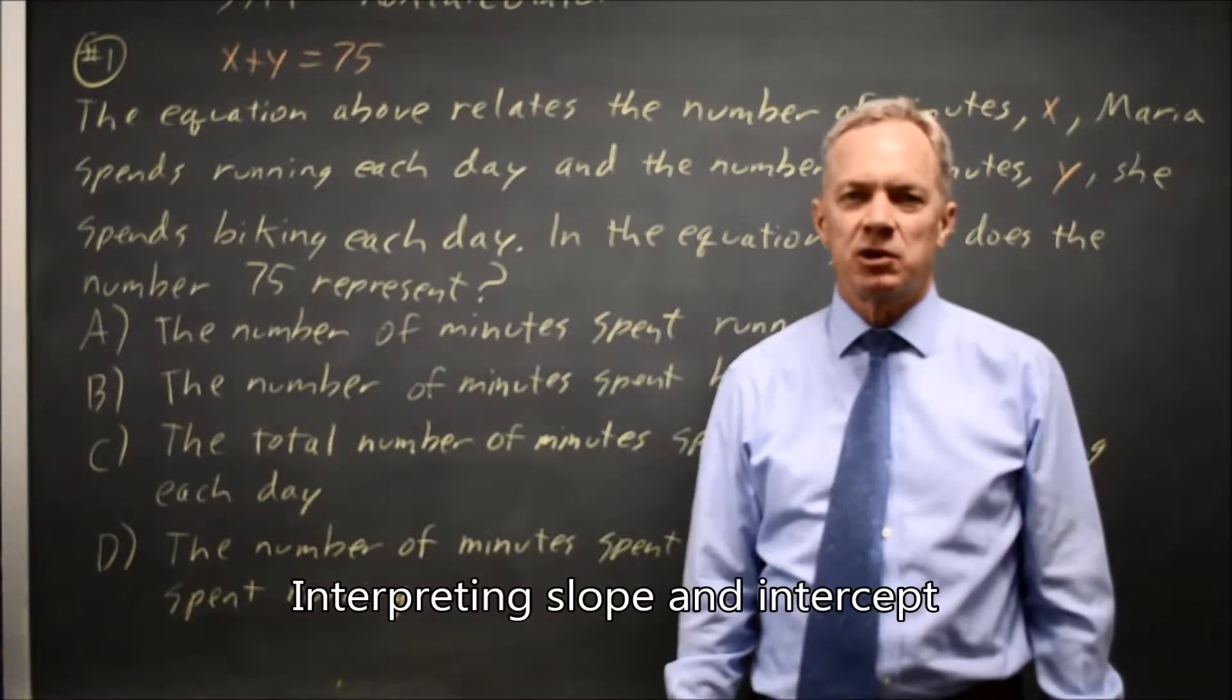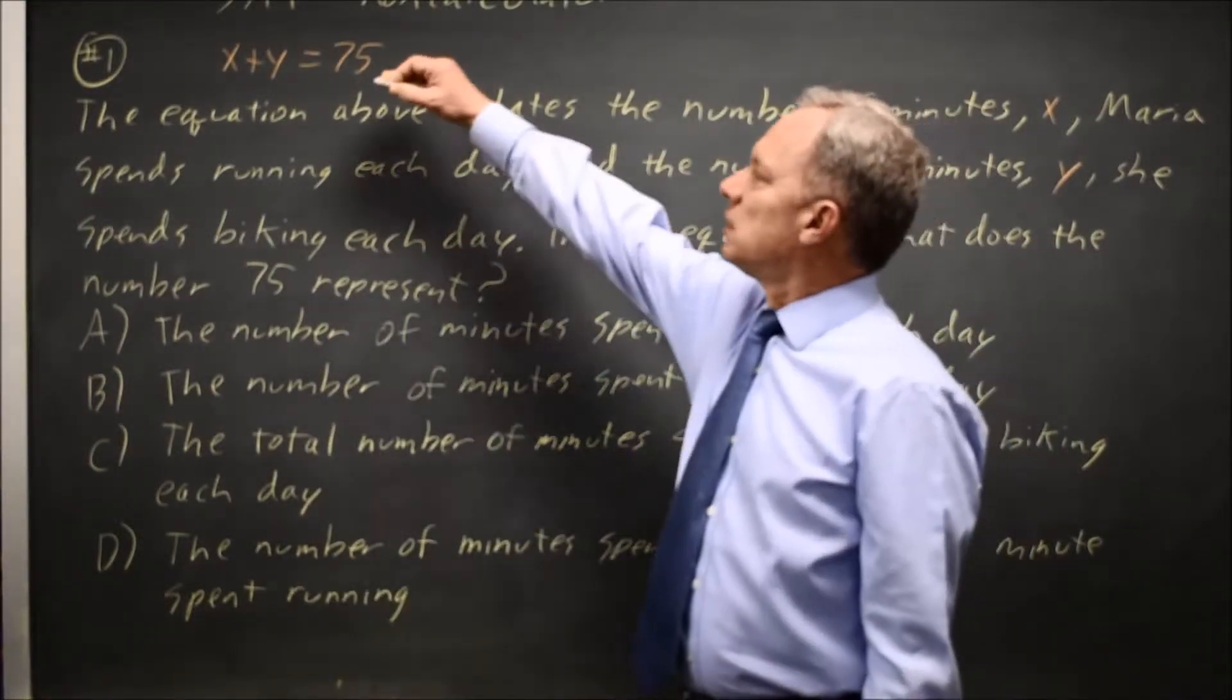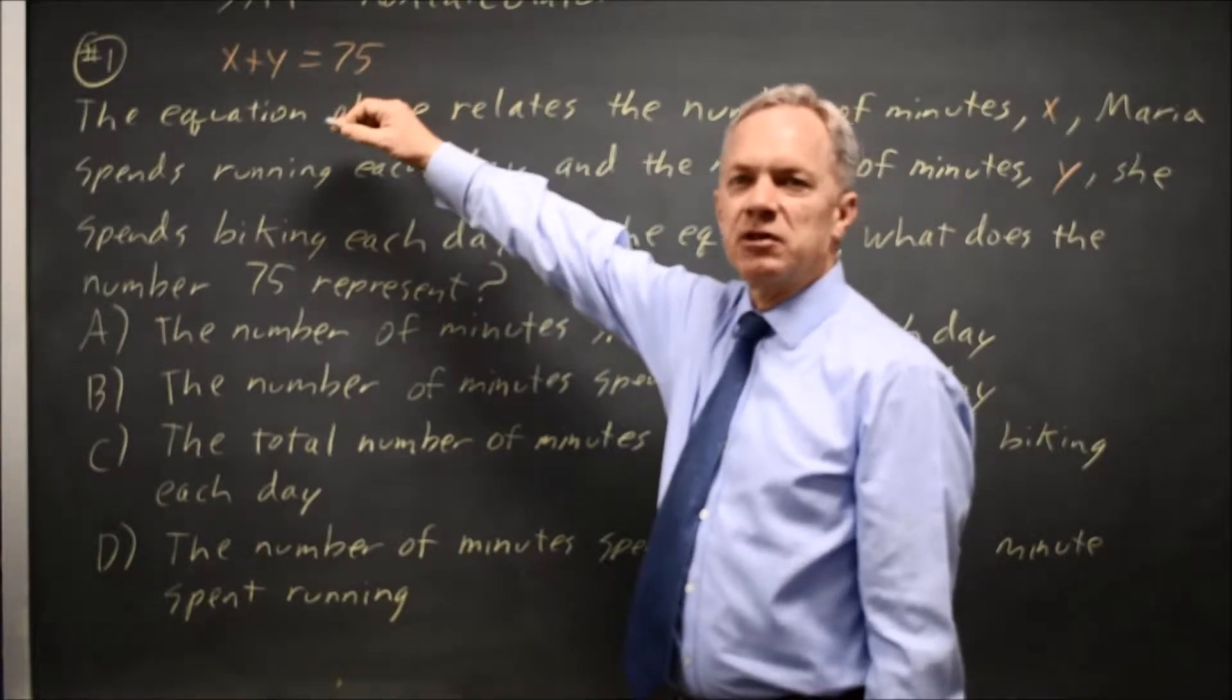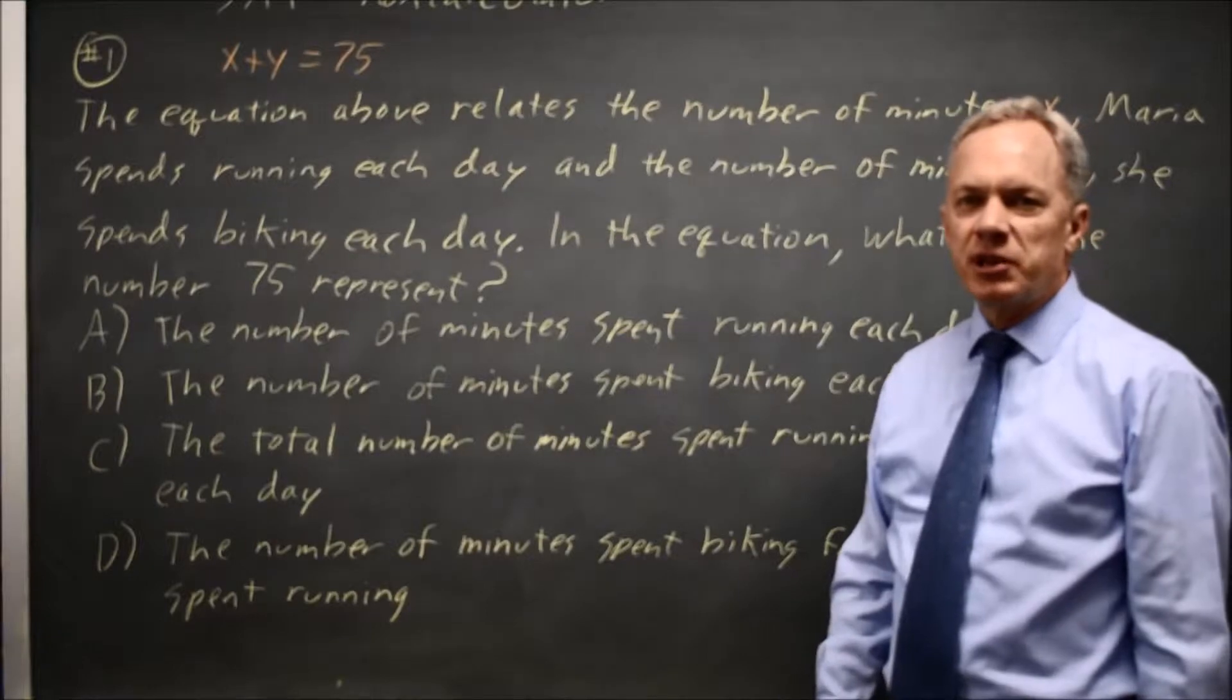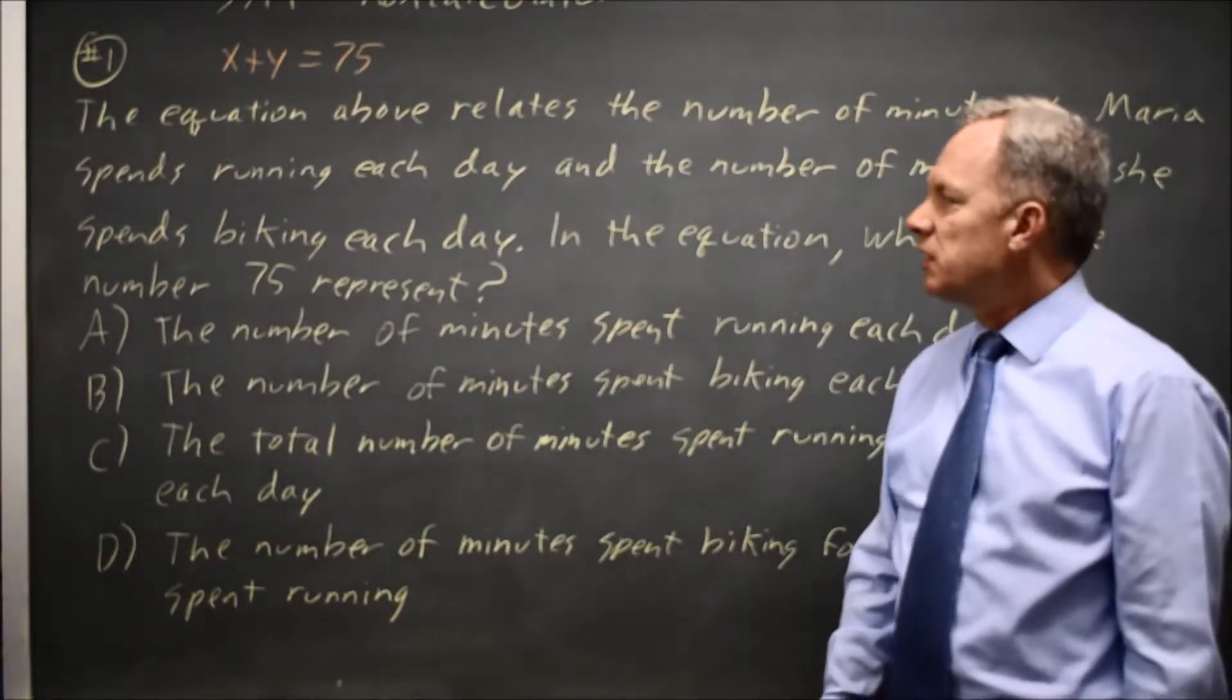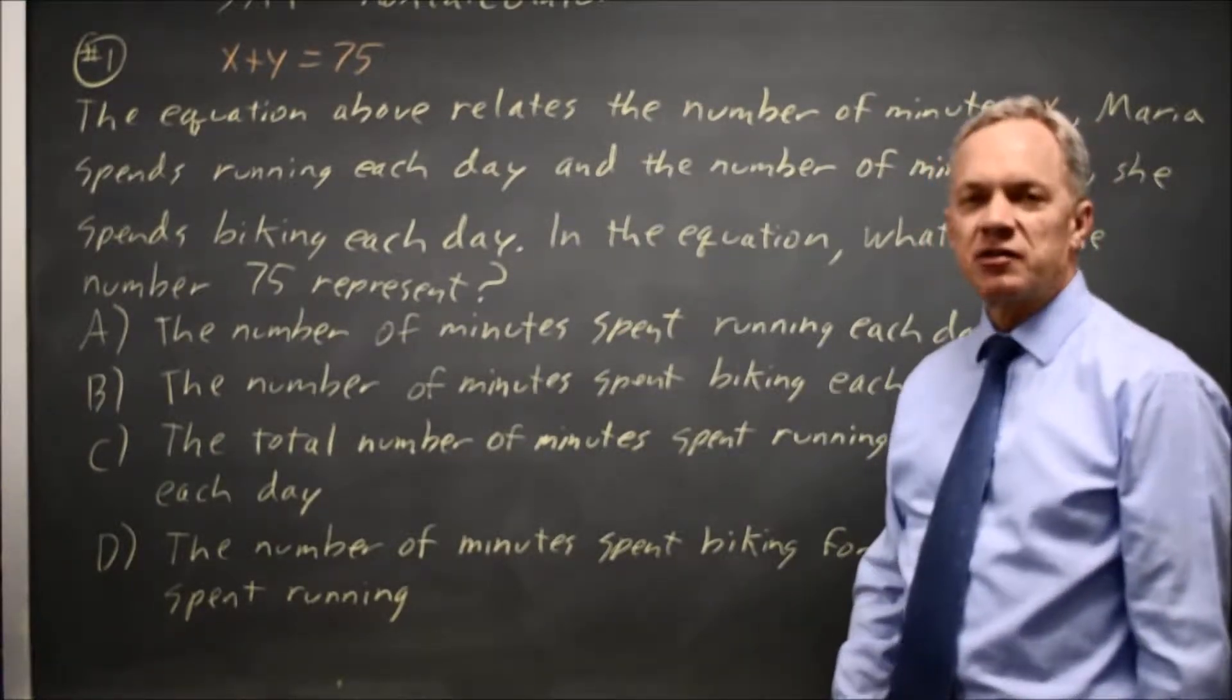This is non-calculator question number one. College Board gives us a linear expression, x + y = 75, where x is the number of minutes Maria spends running each day, and y is the number of minutes she spends biking each day. They ask for the meaning of 75 in this equation.